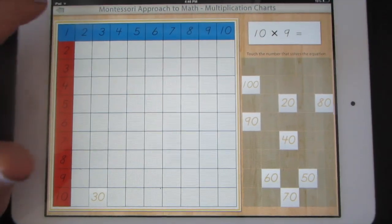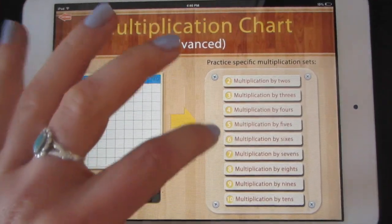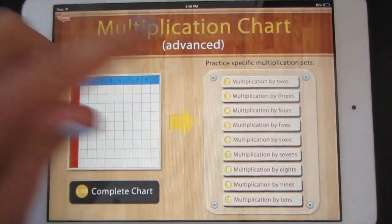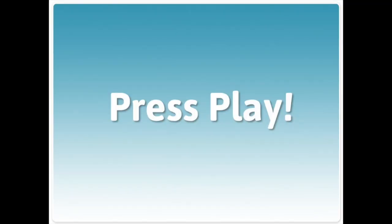When you finish with your 10s, you can also try your 5s, Multiplication by 5s. When you're ready, tap Play. But don't forget to come back to SkyMath when you're done.